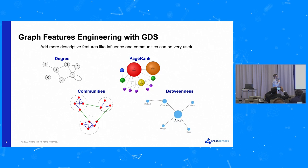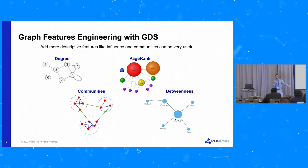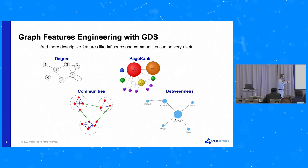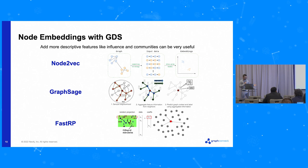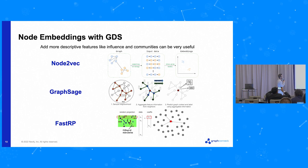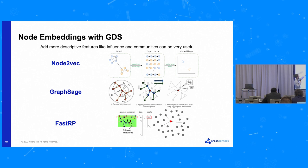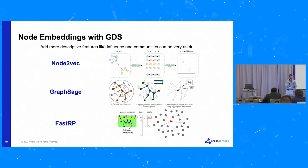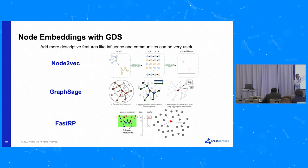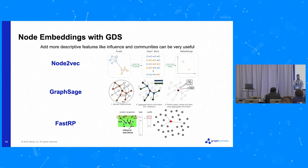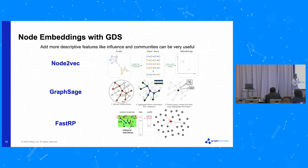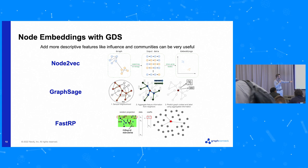Graph features from GDS include PageRank, community detection, betweenness centrality, and more. The Neo4j Graph Data Science library helps us create these features very easily. For node embeddings, we have three main options: Node2Vec, which uses random walk sampling strategies and a model similar to Word2Vec; GraphSAGE, which aggregates feature information from neighborhoods using neural networks to create embeddings; and Fast Random Projection, which is based on a dimensionality reduction technique to create node embeddings.